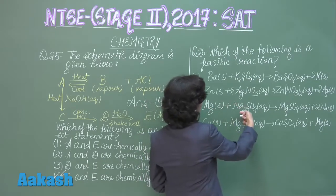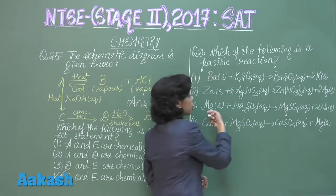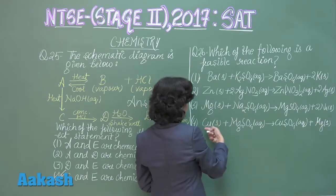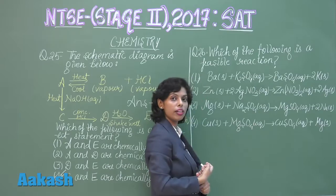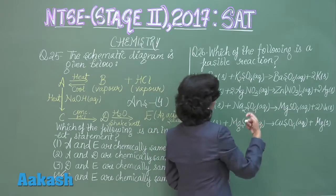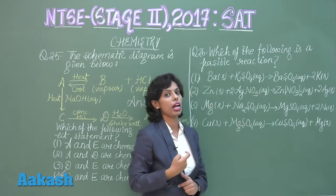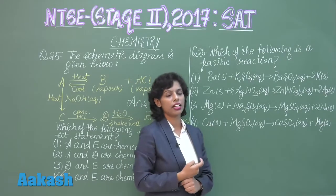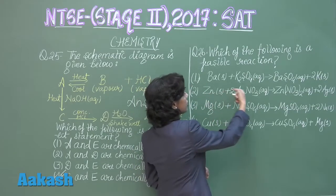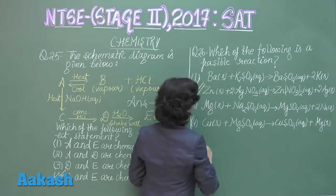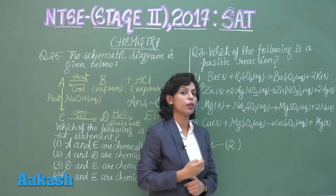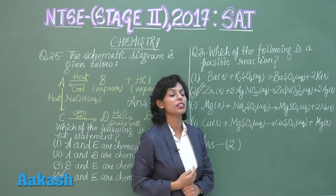Option 3: Magnesium reacting with sodium sulfate — magnesium is less reactive than sodium, so it cannot displace sodium; not feasible. Option 4: Copper displacing magnesium from magnesium sulfate — copper is less reactive than magnesium, so this is also not feasible. Based on the reactivity series, the correct answer is option 2, since zinc is more reactive than silver and can displace it from silver nitrate solution.